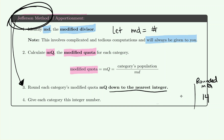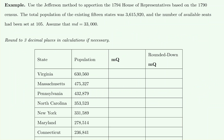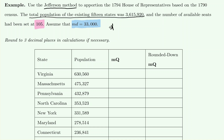We're going to see an example of the Jefferson method on the next page. We are asked to use the Jefferson method to apportion the 1794 House of Representatives based on populations at that time. The total population was 3,615,920 people, and there were 105 seats to distribute. We're told the modified divisor is 33,000, so MD = 33,000.